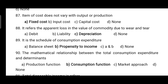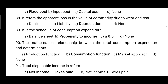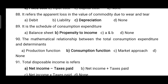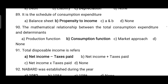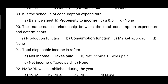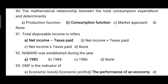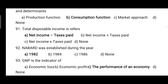An item of cost that does not vary with output or production is called fixed cost. The apparent loss in the value of a commodity due to wear and tear is known as depreciation. A schedule of consumption expenditure is referred to as propensity to consume.